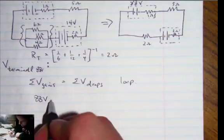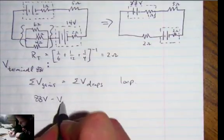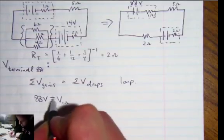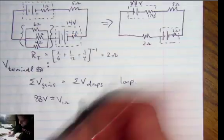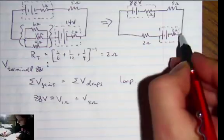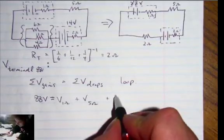Where our gain is 88 volts, then there's a drop minus V 1 ohm. This is the symbol, sorry, equals our drops. There's a 1 ohm, there's a drop there, 5 ohm, and then we have another 2 ohm.